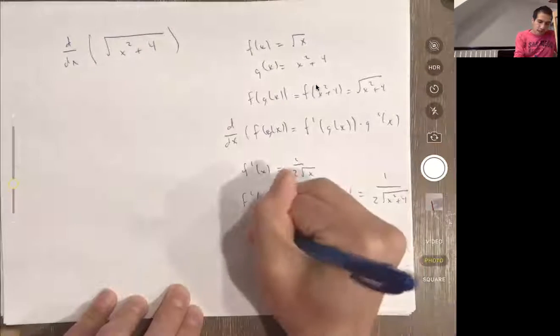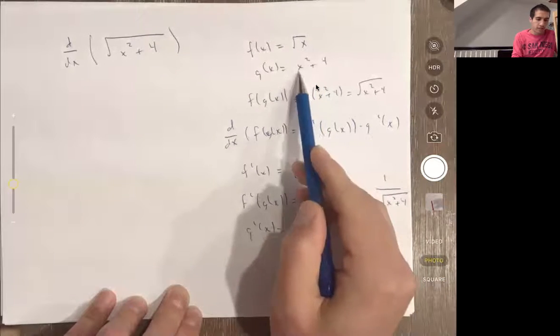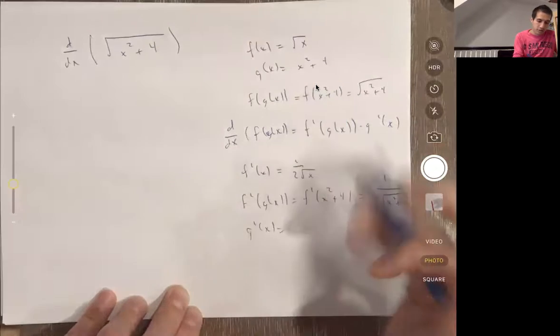Now g'(x), this one's pretty easy. I use the power rule, so this is 2x plus 0, which is 2x.